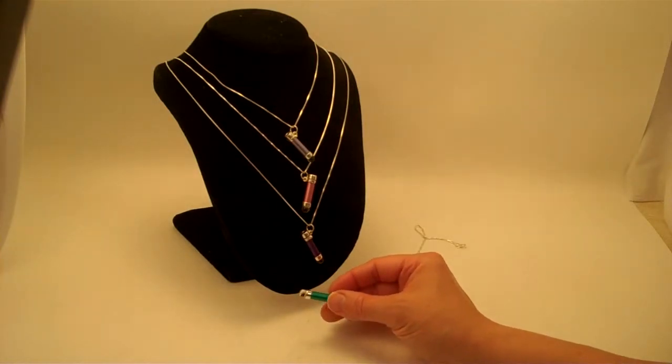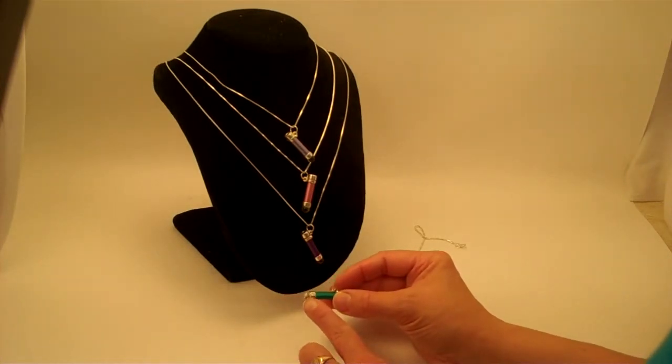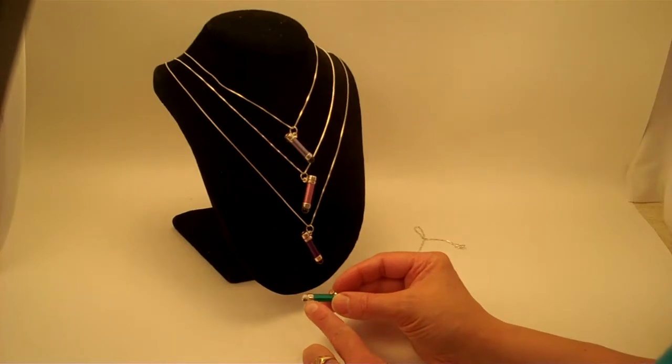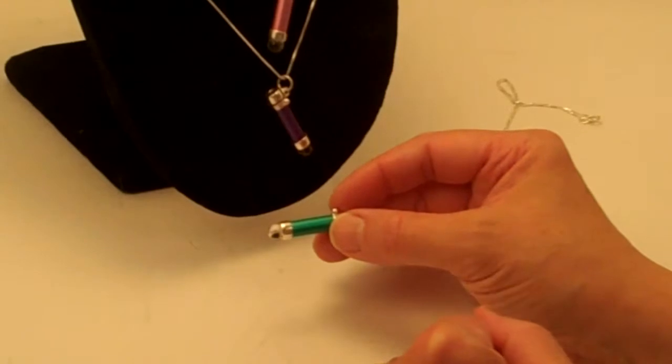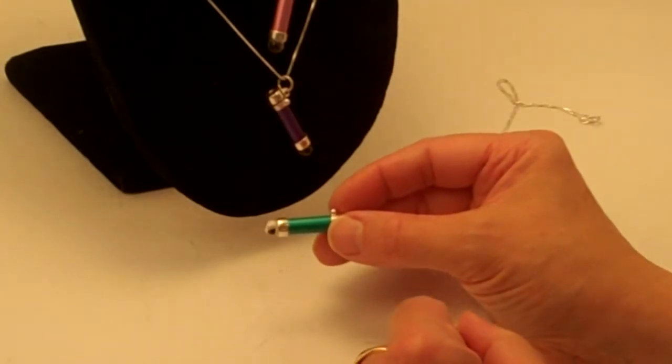These are actually tellidoscope necklaces. These have a clear marble at the very end of the object chamber here, and so it creates a kaleidoscopic image of whatever you view in your world.